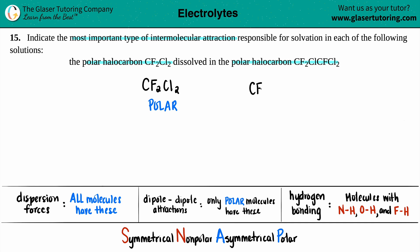And then the same thing for the other one, CF2Cl, CFCl2, they said that this was polar as well. Now, the most important type of intermolecular attraction is always going to be the strongest intermolecular force. So the strongest force that the molecules have in common. So the question is, what intermolecular force do these two molecules have?